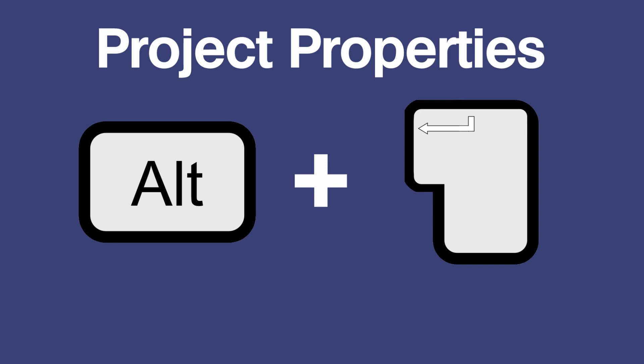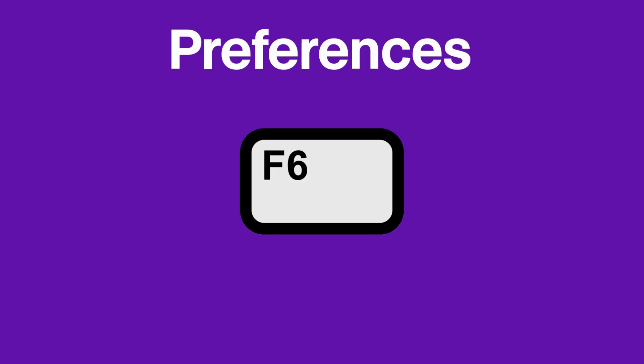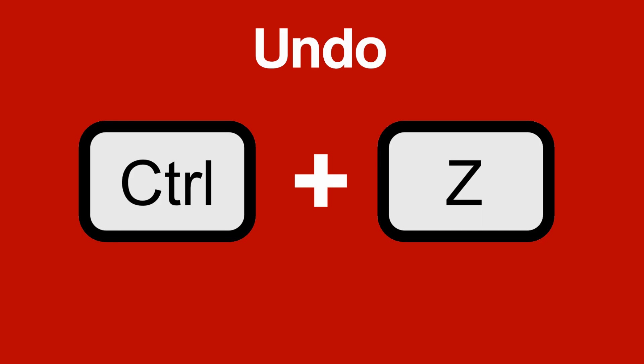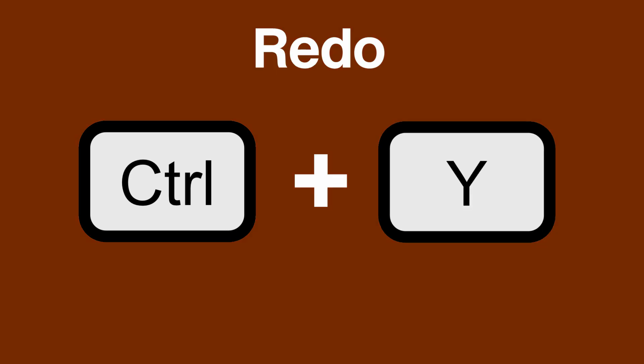To open project properties you press ALT and Enter. To open preferences you press F6. To undo an action you press CTRL and Z. To redo an action you press CTRL and Y.